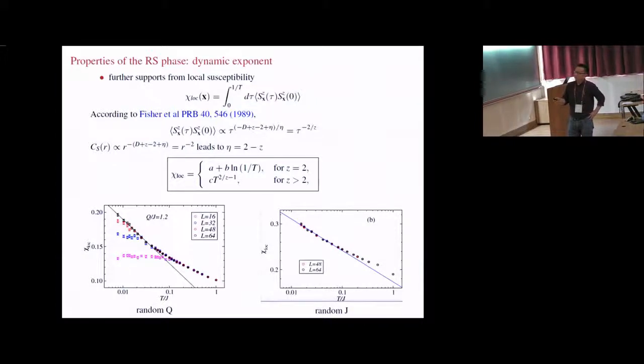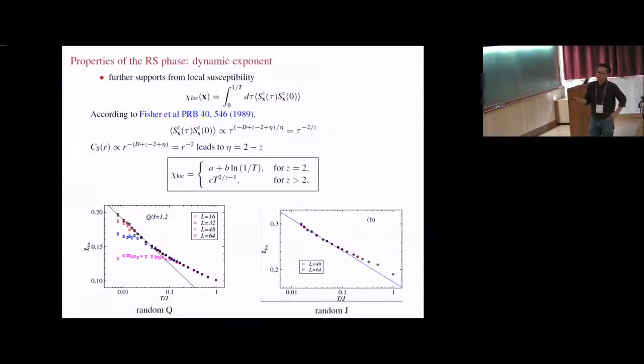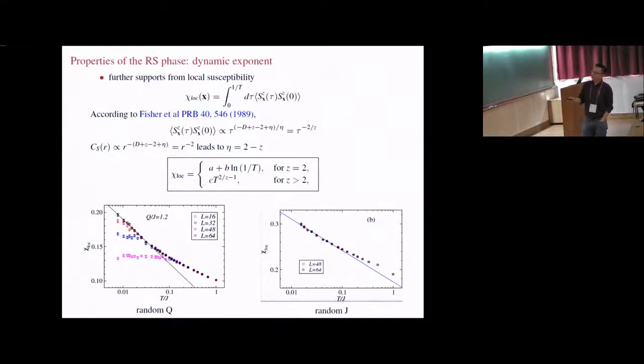We can also calculate the local susceptibility, which has a slightly different scaling behavior. At critical point, it diverges in a logarithmic way, and it has the same power law for the RS state. Here we simulate at the critical point. This is logarithmic. Here's also, this is for random j, this is for random q. I guess this local susceptibility is also accessible in experiments.